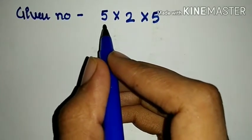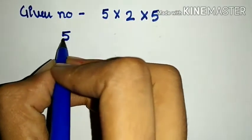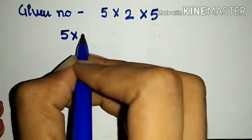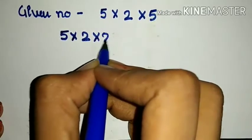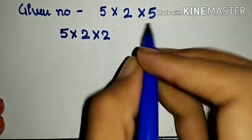We will multiply 5, 1 times again, and 2, 2 times again. How do we write this? 5 into 2 into 2. So, what did we do, 5 one more time, and 2 two more times.